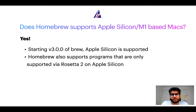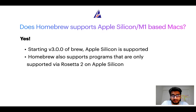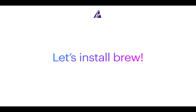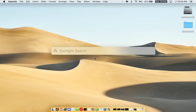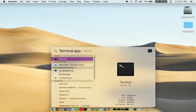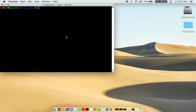Now that I've answered your questions on safety and compatibility of Homebrew, let's get to the installation process. Before we can install anything using brew, we need to install the package manager itself on your Mac. First, press Command and Space on your keyboard. This will open Spotlight Search, and then type terminal.app. You will see the Terminal app — simply double-click on it to open Terminal.